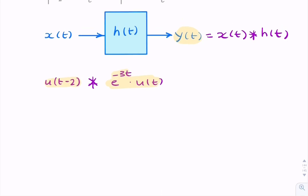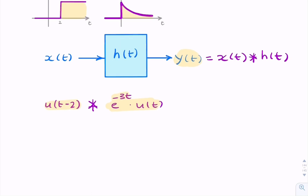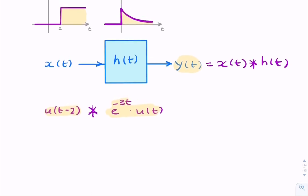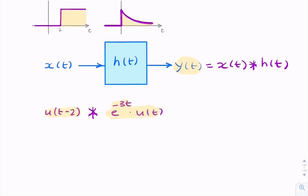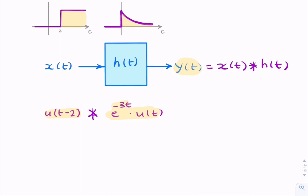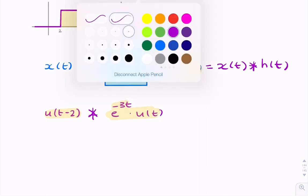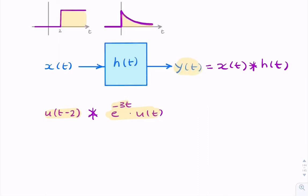The input is a unit step, and the impulse response is a one-sided exponential function. So what we're trying to do is a convolution between the two. So we write out our convolution expression. We can say y(t) equals the integral from minus infinity to infinity.